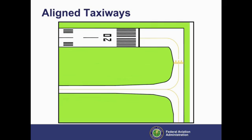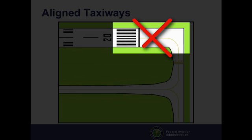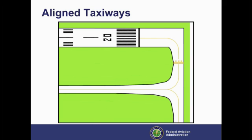Airports occasionally relocate runway thresholds to mitigate noise or jet blast issues. A common design error is to align the taxiway with the runway, as shown in this example, where the new taxiway curves onto the runway to meet the new runway threshold. Aligned taxiways like this one are prohibited. A pilot with decreased situational awareness may not realize that the airplane is in the direct line of airplanes landing or taking off.